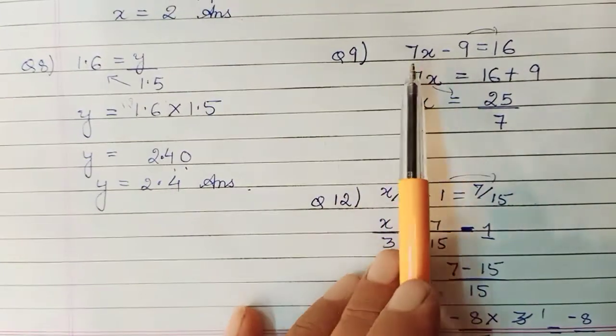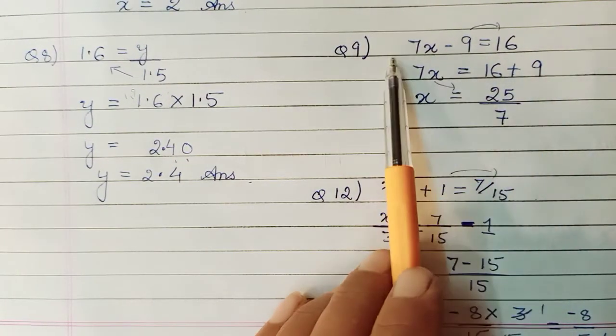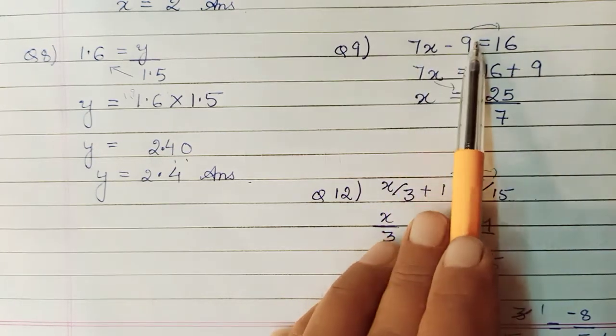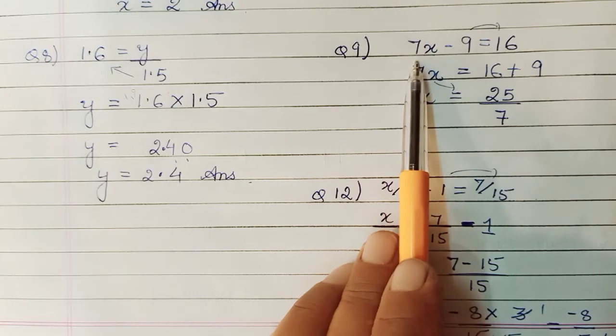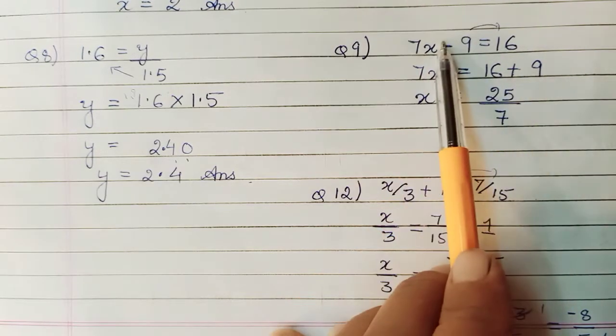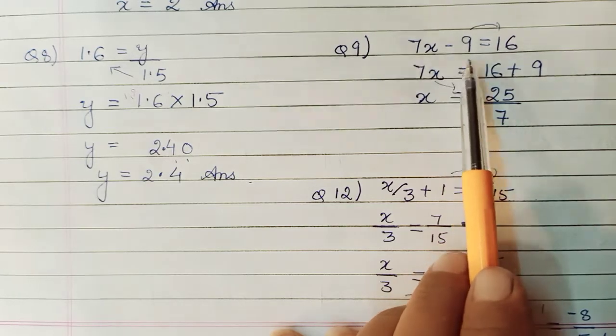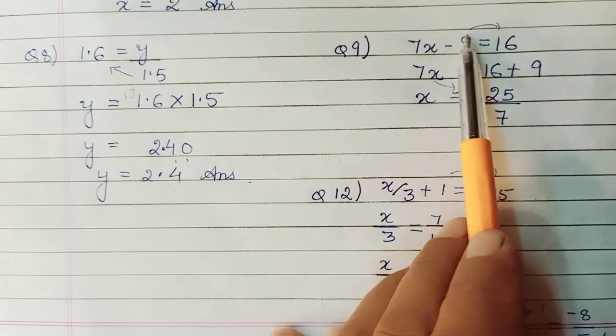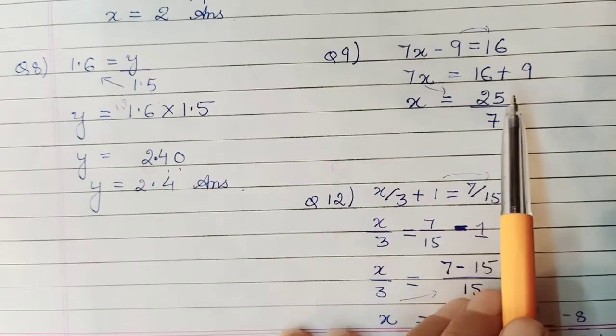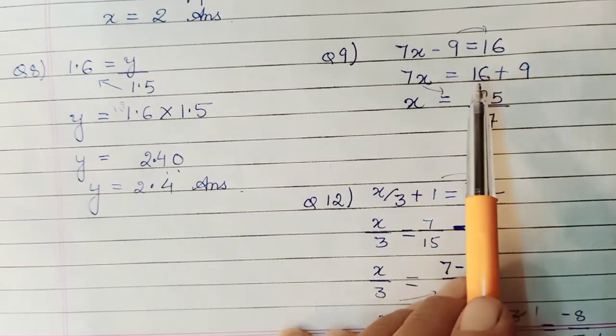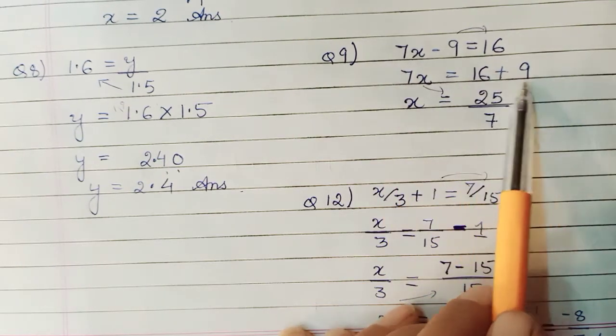See the next one now. Ninth here. That's 7x minus 9 equals 16. Now in this you have to do step wise. First you balance plus minus operations. Then into and division we move on to. So this 9 will be removed from here. For removing this 9, we need to plus 9. Or this has gone here as plus 9. So then in the next go, this 7 will be removed.